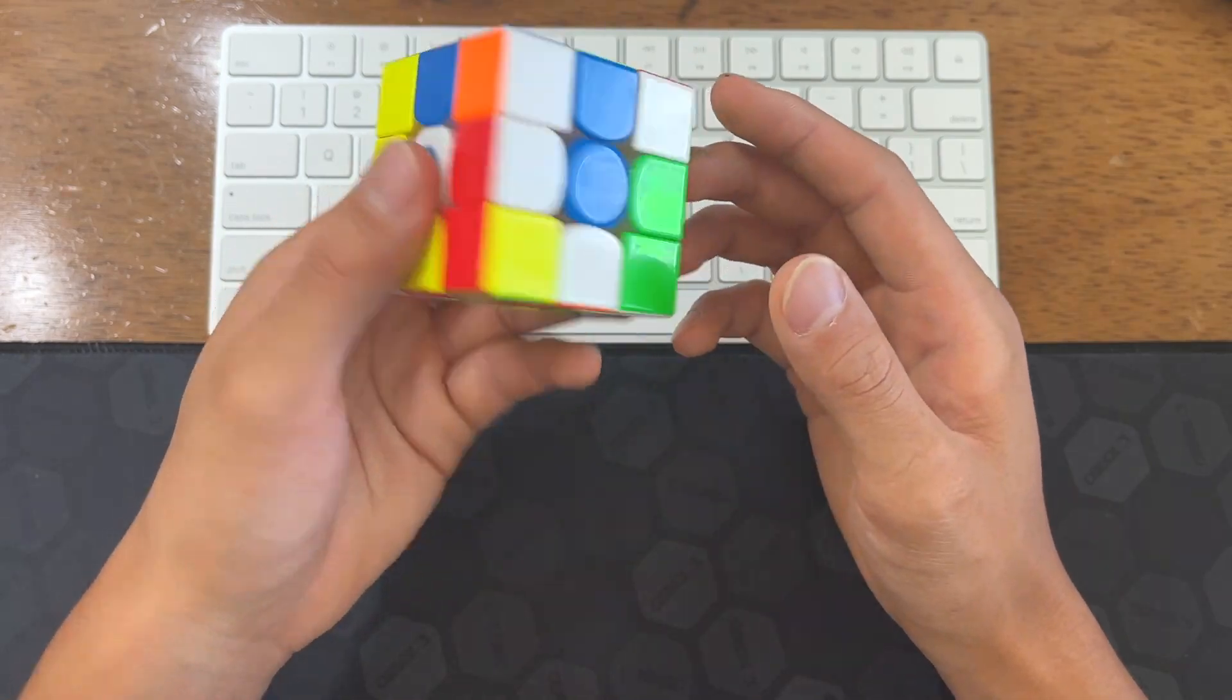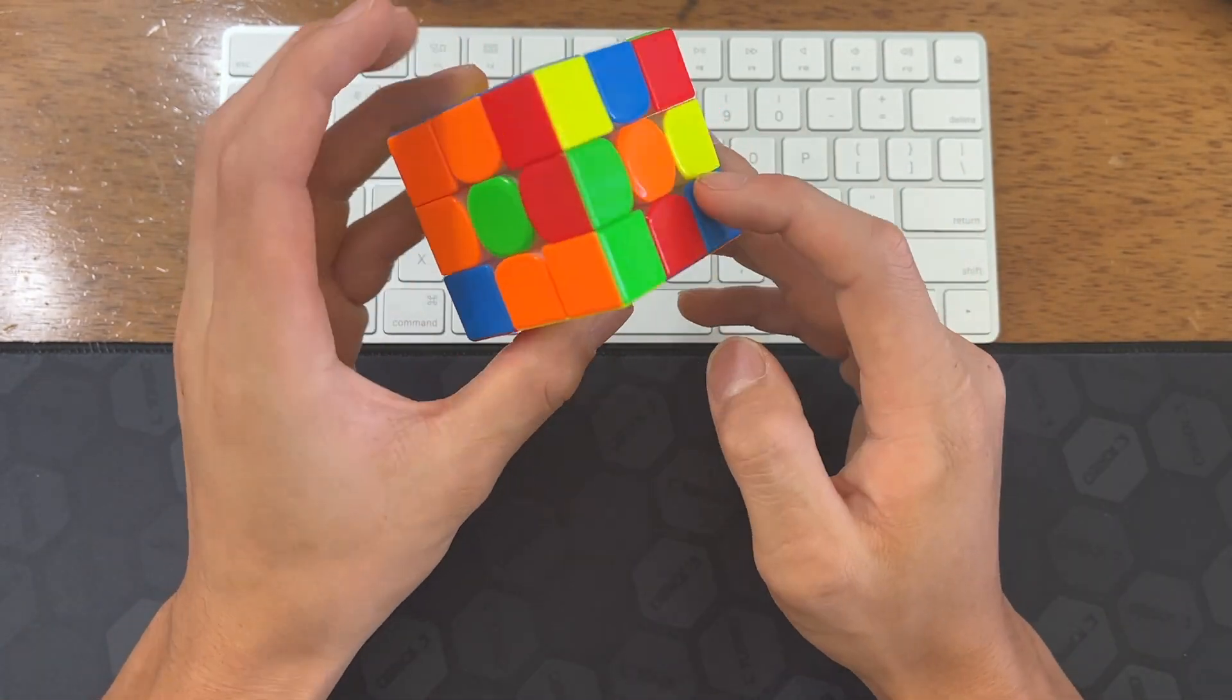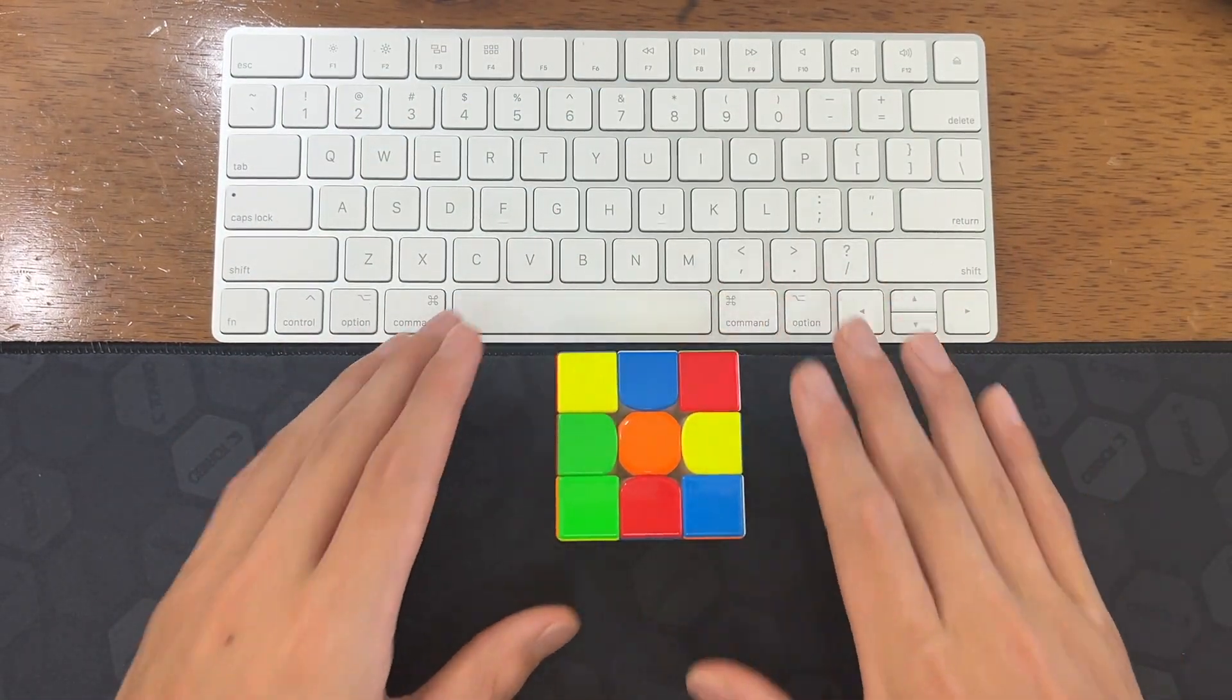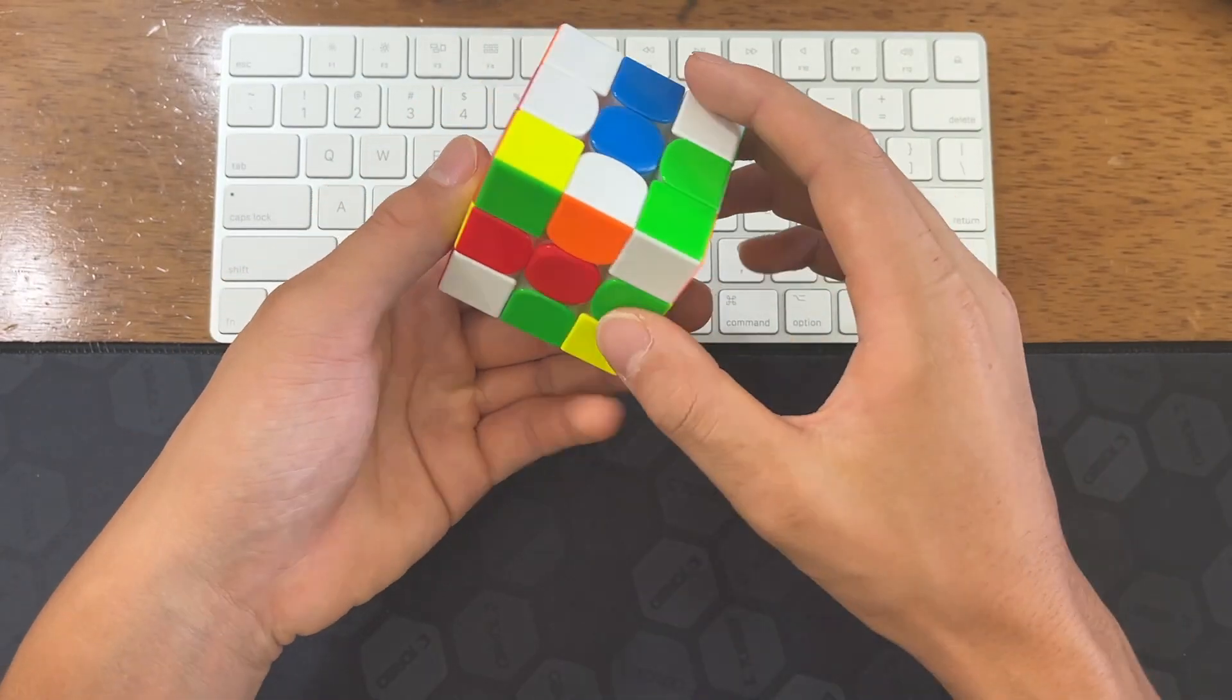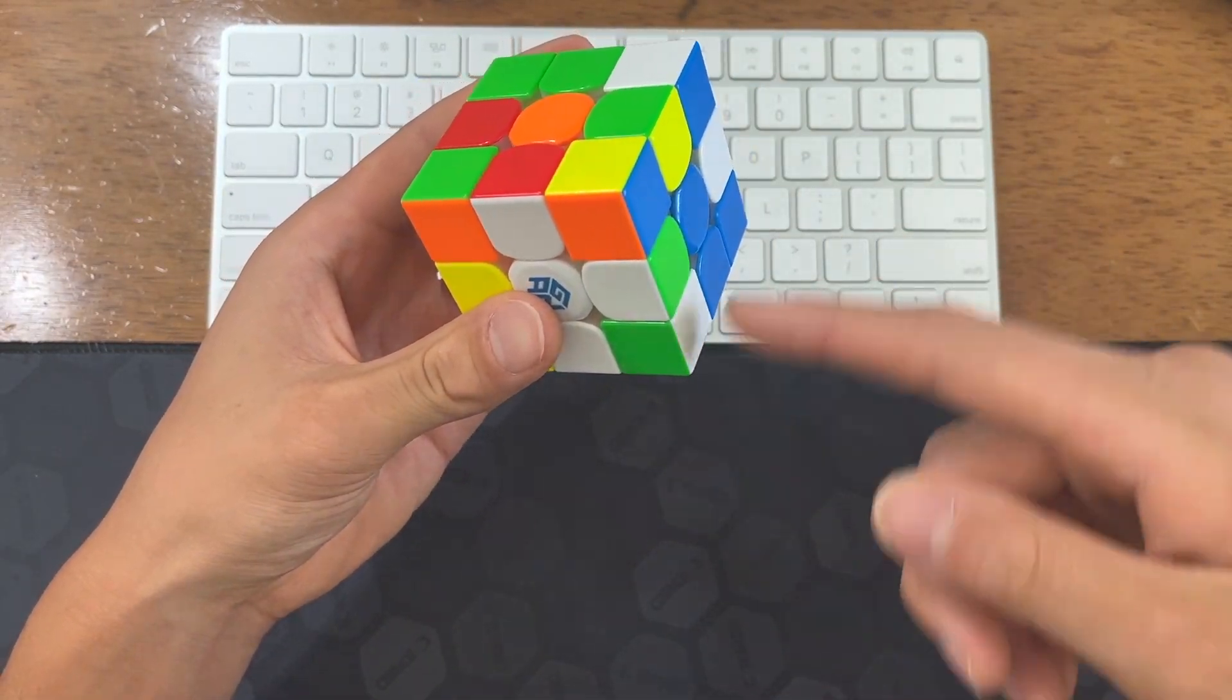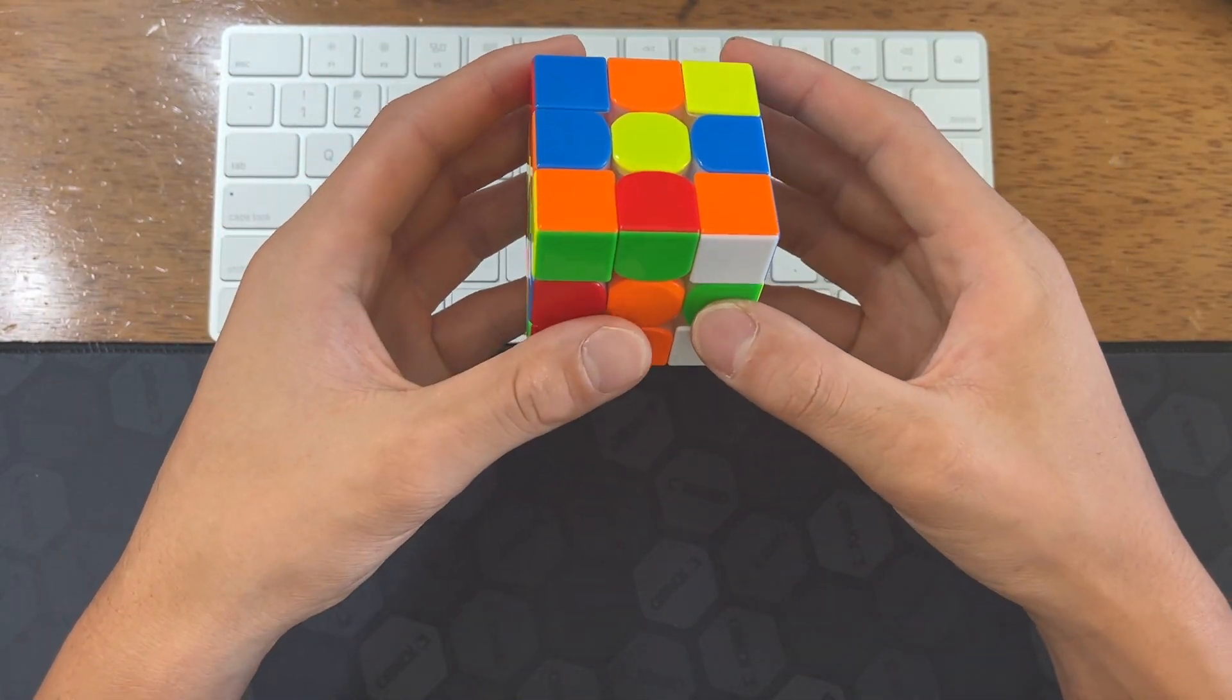So pretty easy cross solution here. And then first pair I'm going to do is this and this. This is an easy pickup because you just pick it up and then you do a D' to connect that, and then do an R F R' to just make all those opposite.